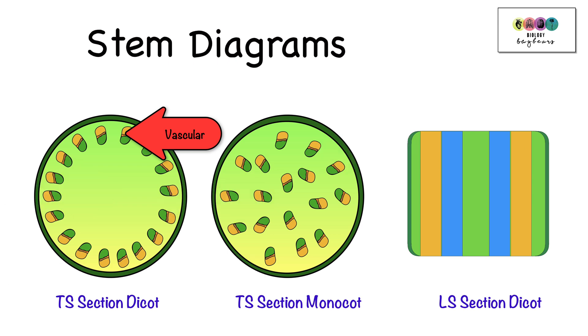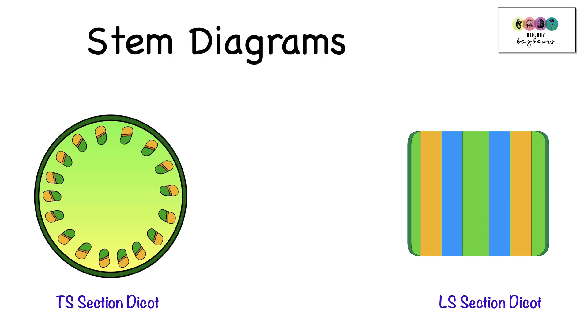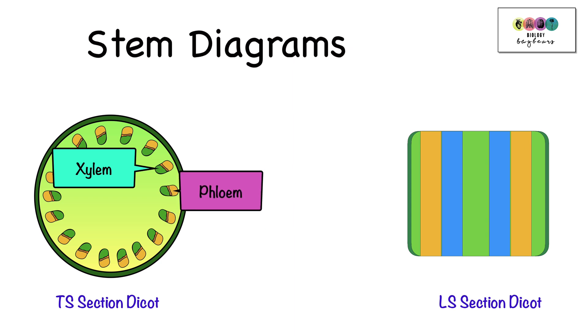So finally, before we move away from the TS section, let's have a look at the dicot stem, particularly the vascular tissue. In one question, you were asked to mark in which part of the vascular bundle was the xylem and which was the phloem. Xylem is always towards the center. It's facing the center of the stem. Phloem is facing the edge, the outer edge of the stem.